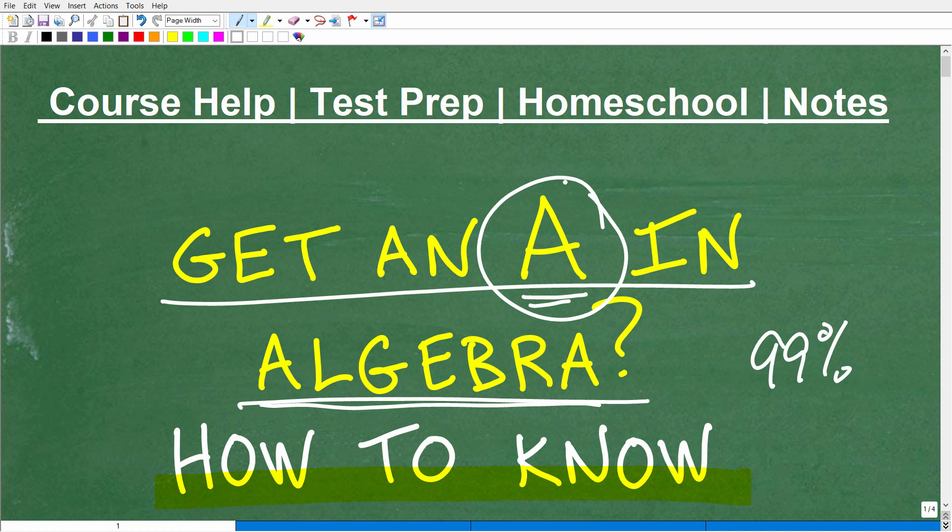But first, let me quickly introduce myself. My name is John. I'm the founder of Tablet Class Math. I'm also a middle and high school math teacher. I've been teaching math for decades. And I've come to the conclusion that all math students can get an A in mathematics. But it requires two things. One, you've got to be willing to do the work, take the notes, do all your homework, pay attention to the teacher. But the second thing you need is great math instruction. I'm talking about easy to understand, clear and understandable math instruction.